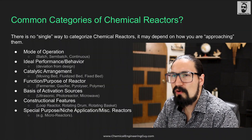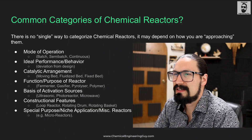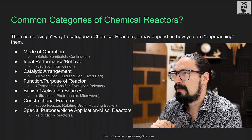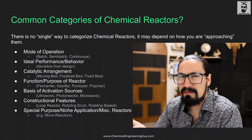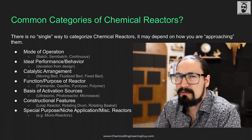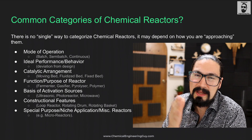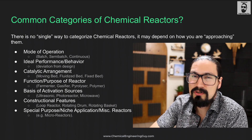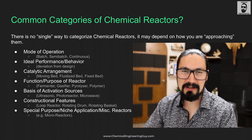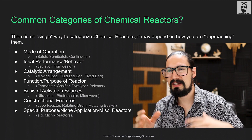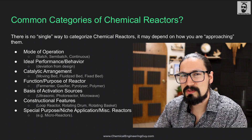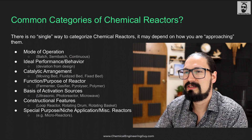There is no single way to categorize chemical reactors — remember that. It may depend on how you are approaching the type of chemical reactors. The very first category is mode of operation: whether we're working with a batch reactor, a continuous reactor, or a semi-continuous reactor, which is something in between — like a hybrid. This is one of the easiest ways to categorize reactors.